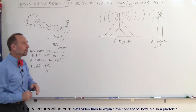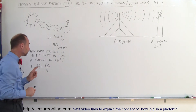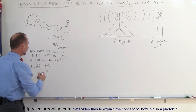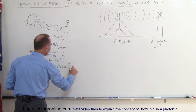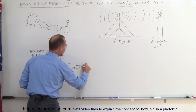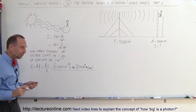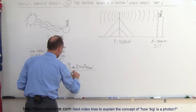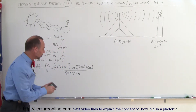We'll also do a similar calculation for radio waves coming from a broadcasting radio tower. The energy for one photon is h times the frequency, which is hc over lambda, equal to 6.626 times 10 to the minus 34 joules·seconds — Planck's constant — times the speed of light, 3 times 10 to the 8 meters per second, divided by the wavelength of visible light. On average, it's about 500 nanometers, which is 500 times 10 to the minus 9 meters.